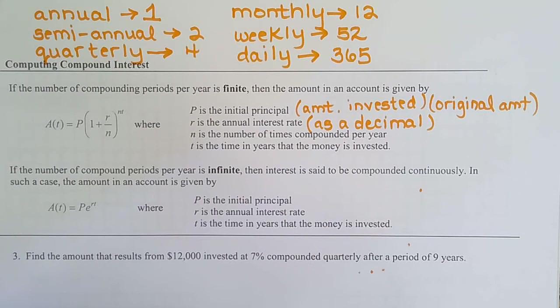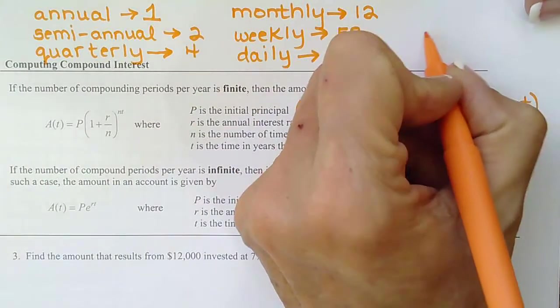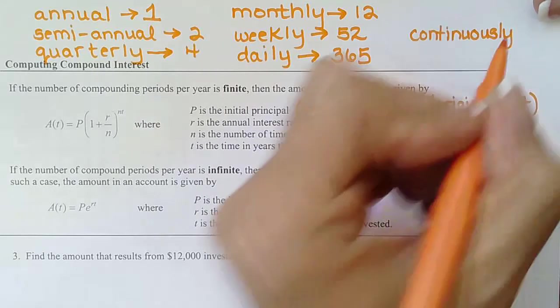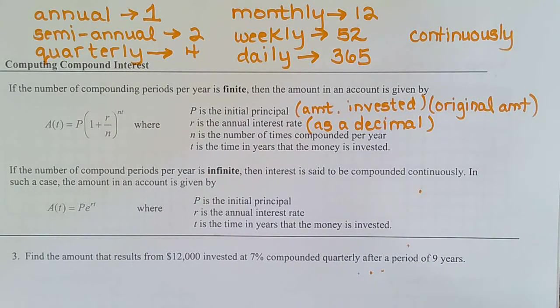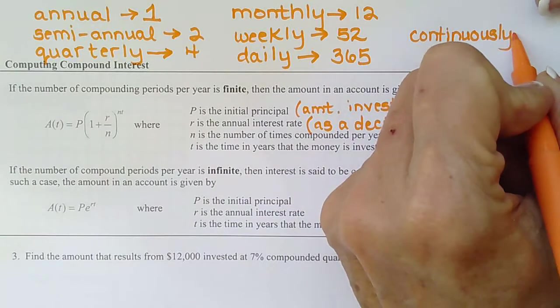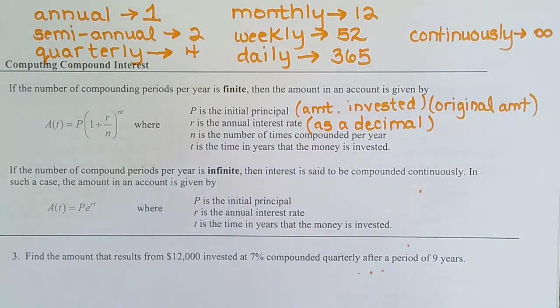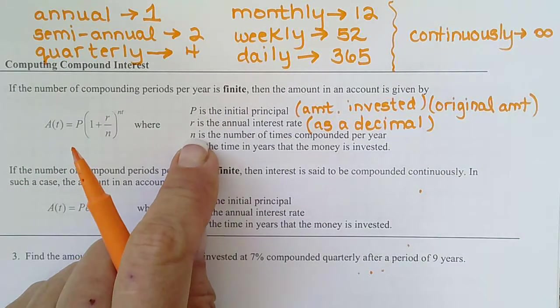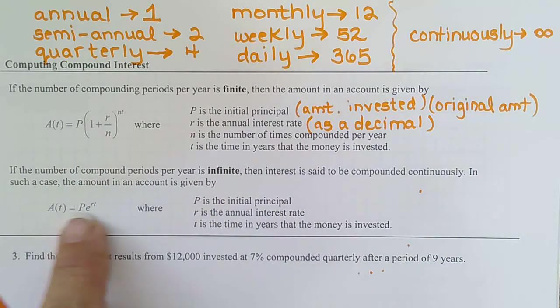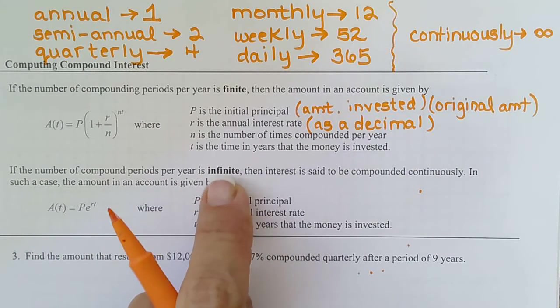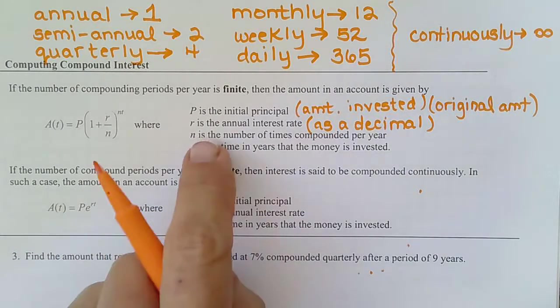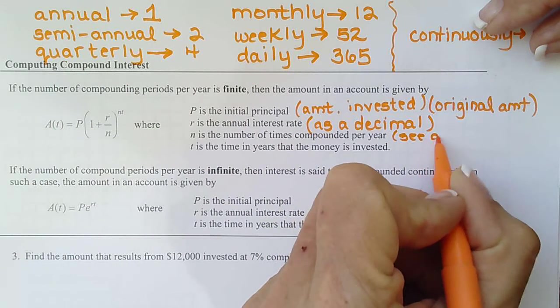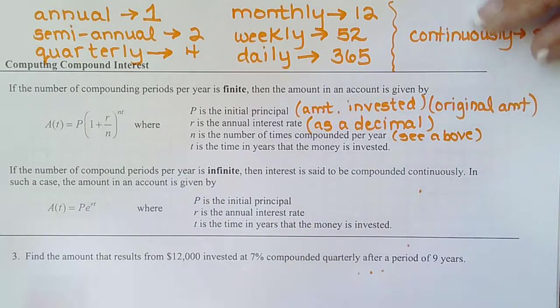And then there is continuously. Compounded continuously has a different formula. That's because continuously, how can I count how many compounding periods there are? There's an infinite number of compounding periods because it's compounded continuously. So it has its own separate little formula. Because what would I put in place of n? I can't put infinity there. My calculator doesn't have an infinity. So this is the formula we use for infinite compounding periods. N is the number of compounding periods per year. And T is the time in years.